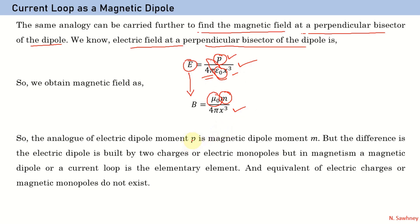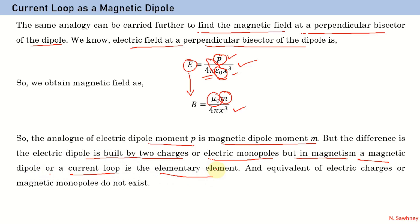The analogue of electric dipole moment p is magnetic dipole moment m. However, the key difference is that an electric dipole is built by two charges or electric monopoles, whereas in magnetism a current loop is the elementary element. The equivalent of magnetic monopoles do not exist — unlike in electrostatics where positive and negative charges form the dipole — because in magnetism, magnetic poles cannot be separated.